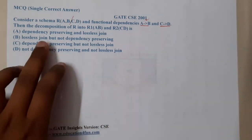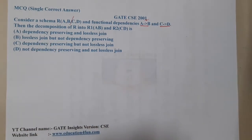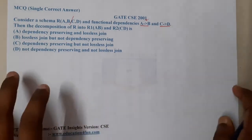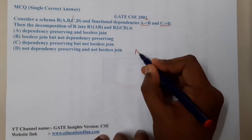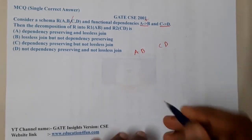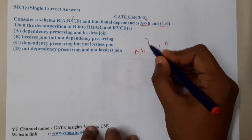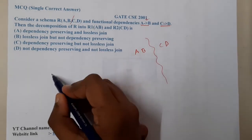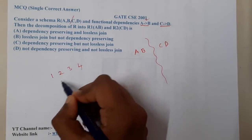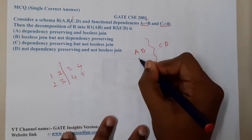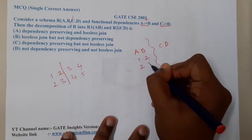They are asking: is this decomposition dependency preserving or not, and is it a lossy join or lossless join? The first thing we can directly say is they divided the table into AB and CD. The issue here is when you break the table without any common element between the two parts.